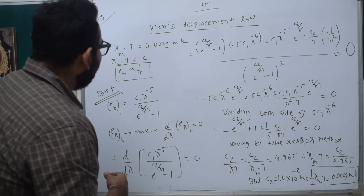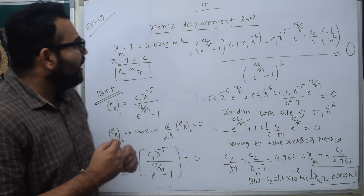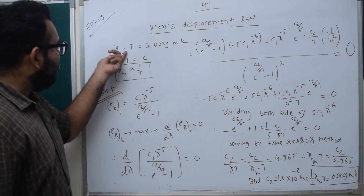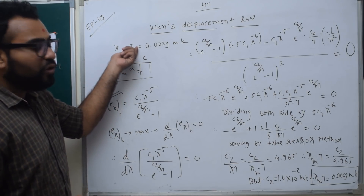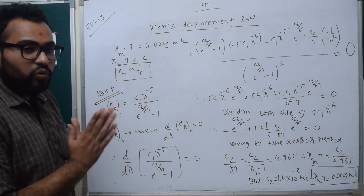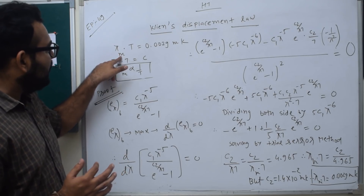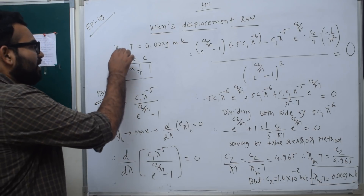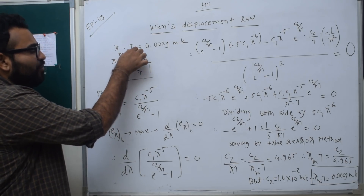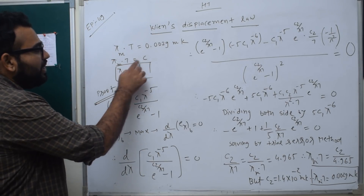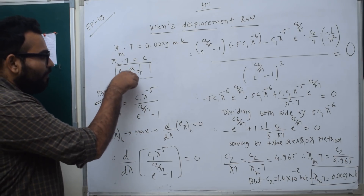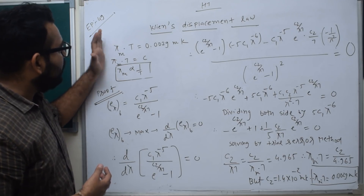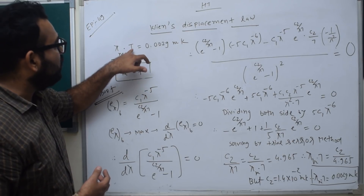So, this is Wien's Displacement Law. According to Wien's Displacement Law, it gives the relationship between the maximum wavelength and absolute temperature. According to this law, the product of maximum wavelength and temperature is constant, and its value is 0.0029 meter Kelvin. So Wien's law states that for a black body, λm multiplied by T equals a constant. λm is proportional to 1 by T, meaning higher temperature gives lower peak wavelength. We need to prove that this product is constant.